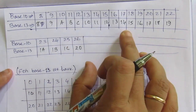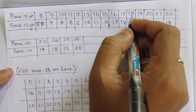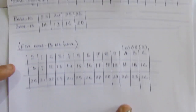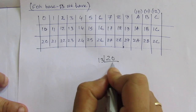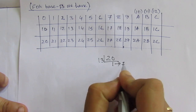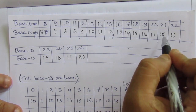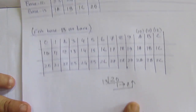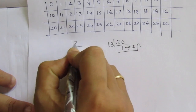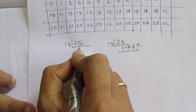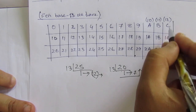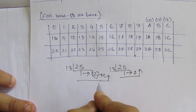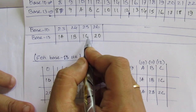Now, let us verify this table by dividing the decimal numbers by 13. Let us check 20: 20 divided by 13 gives 1 with remainder 7, so we write it as 17 in base 13. Let us check 25: 25 divided by 13 gives 1 with remainder 12. Since 12 is written as C, we write 25 as 1C in base 13. So, 25 equals 1C in base 13.